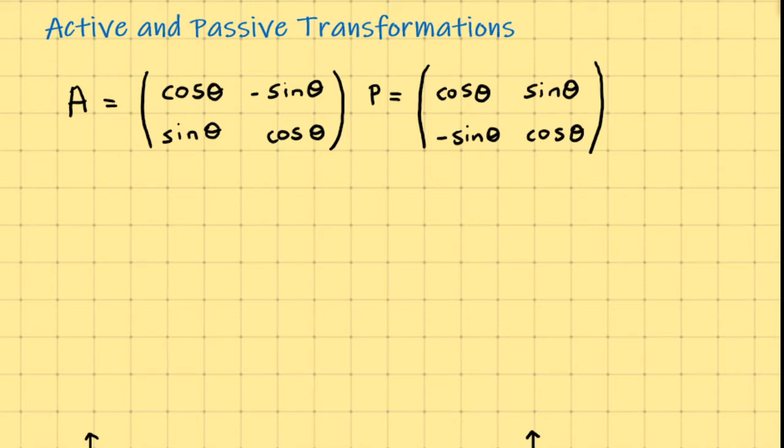I want to just give you a couple more facts about these two active and passive transformation matrices, and then I want to use these matrices to transform one of the Cartesian unit vectors, just to give us an idea of what happens in each case.